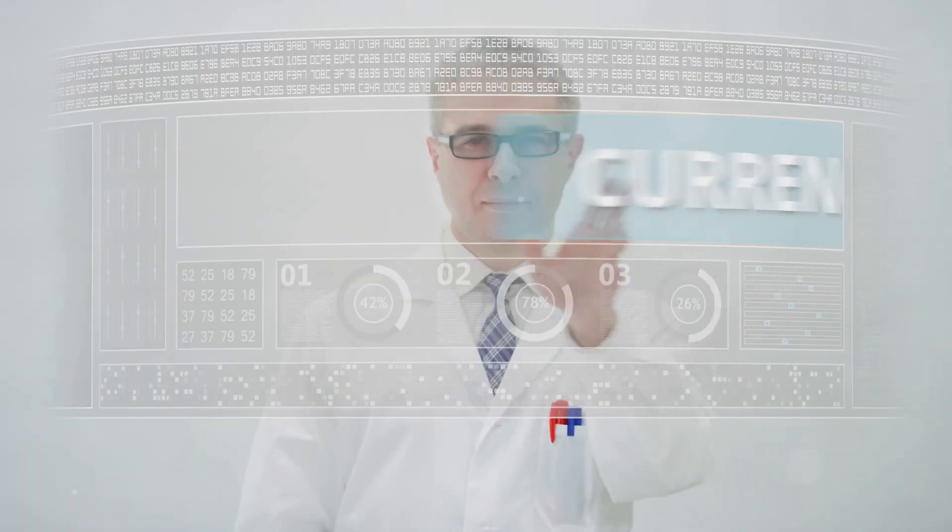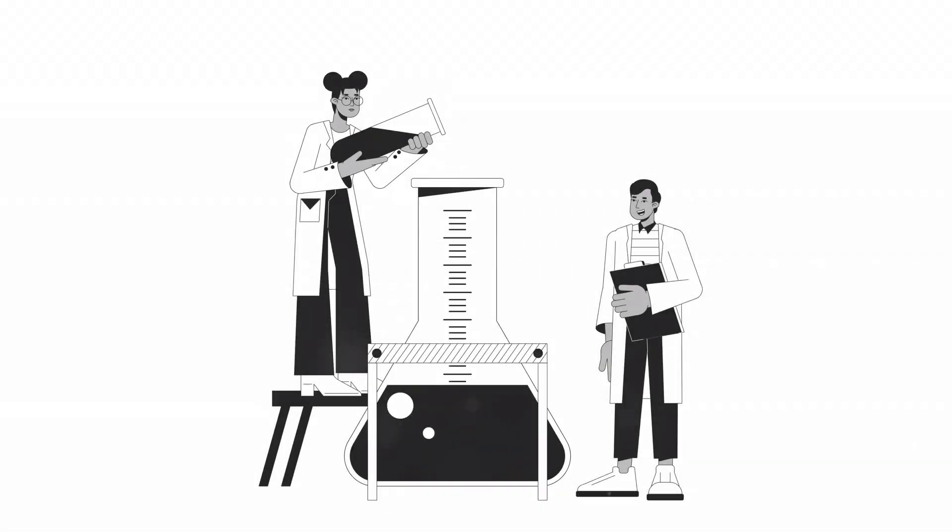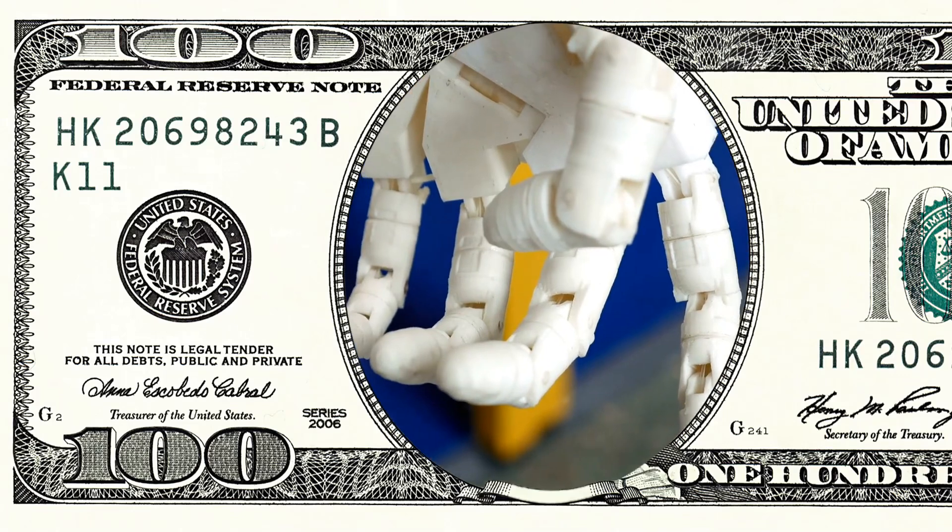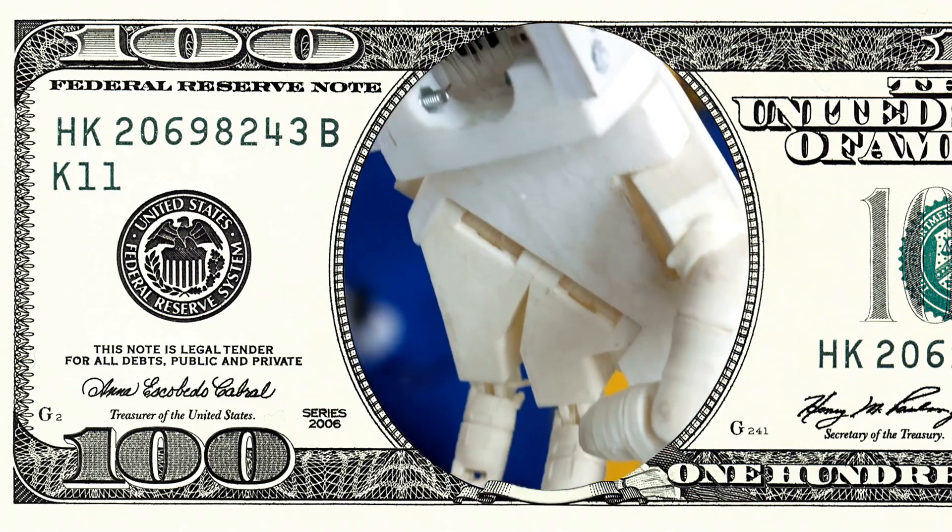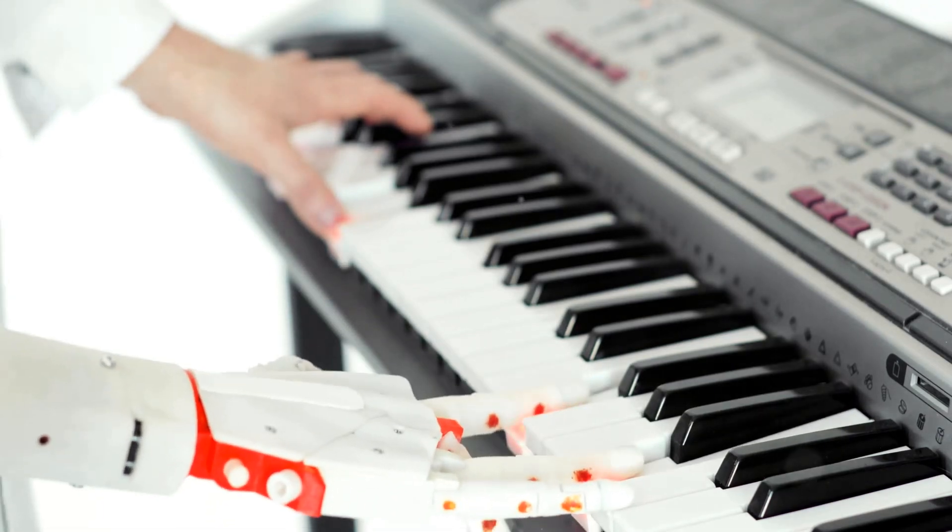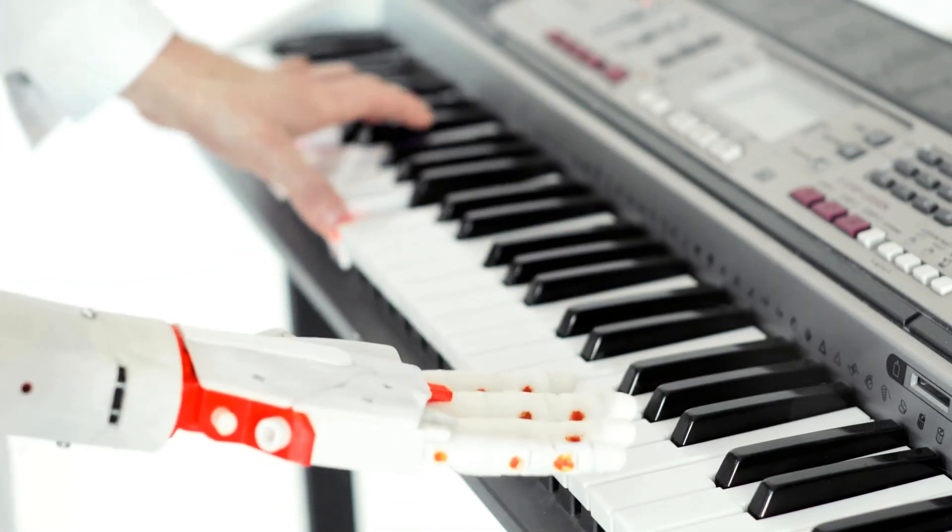Now, let's take a look at some of the groundbreaking projects happening right now. Researchers are pushing the boundaries of what's possible, developing mind-controlled prosthetic limbs. These prosthetics can be controlled with the user's thoughts, providing a new level of independence.